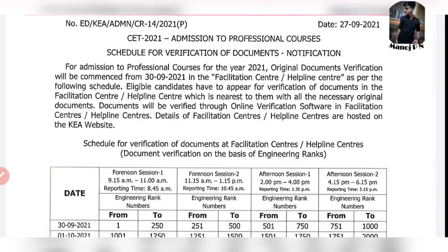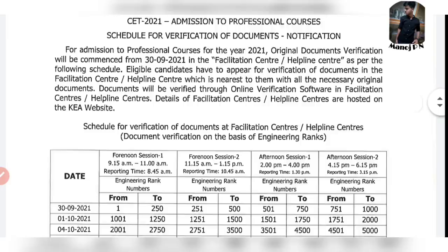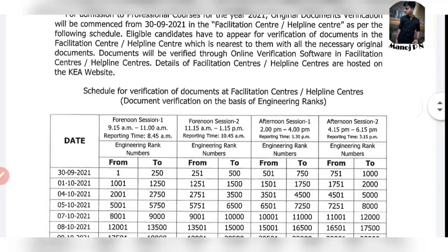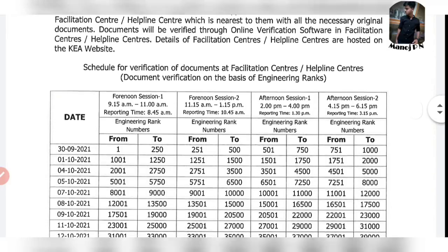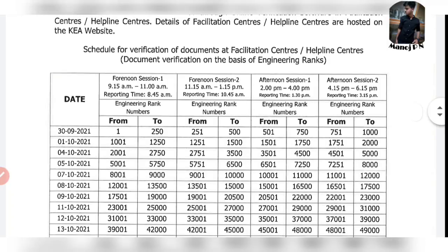For admission to professional courses for the year 2021, original document verification will be commenced from the year 2021 in the facilitation centers or helpline centers as per the following schedule. Eligible candidates have to appear for the verification of documents in the facilitation center or helpline center nearest to them with all the necessary original documents. Documents will be verified through online verification software. Details of facilitation centers or helpline centers are hosted on the K.E.A. website. This is the previous 2-year-old site. Schedule for verification of documents at facilitation center — documents verification on the basis of engineering ranking.